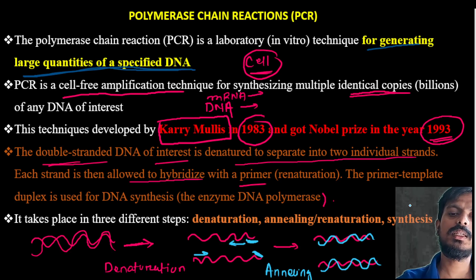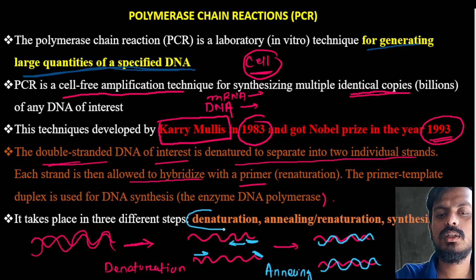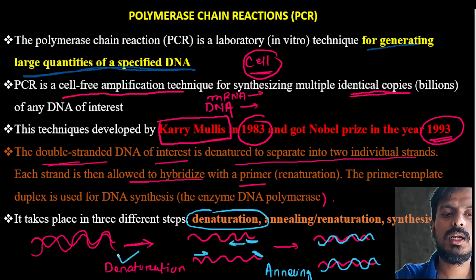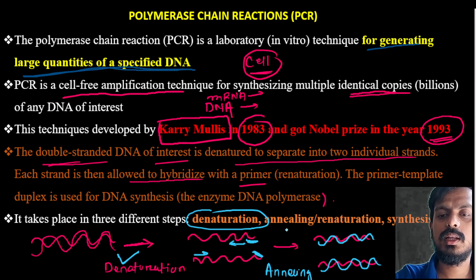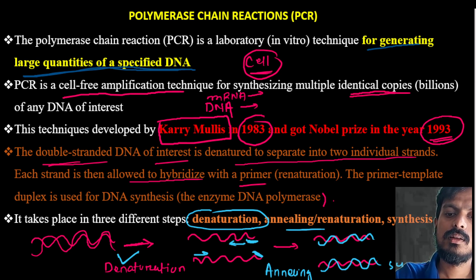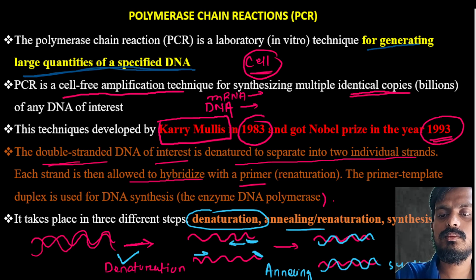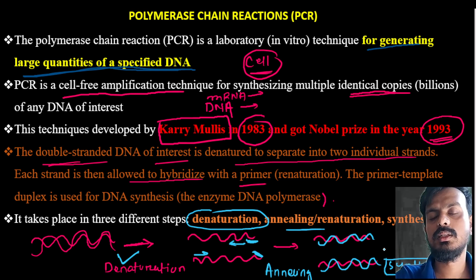PCR has basically three steps. One is denaturation — when the two strands separate. Next is annealing — when primers are joined to the separated strands. Then the third step is synthesis — the synthesis of the new complementary strand.